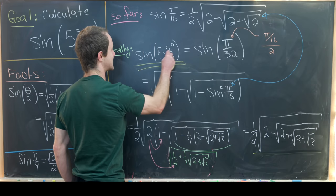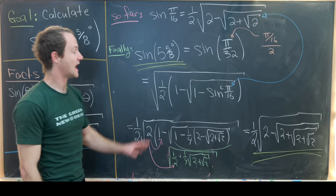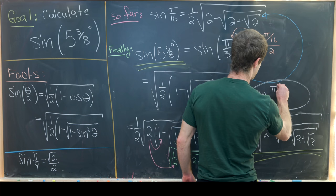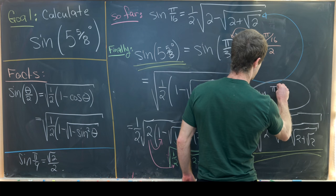This further motivates how we could calculate a closed form for sine of pi over 2 to the n. Write in the comments what you think the closed form of sine of pi over 2 to the n is, based on what we've seen here. And that's a good place to stop.